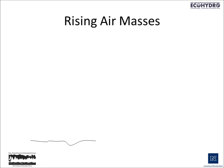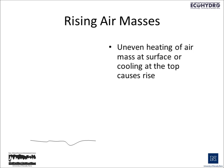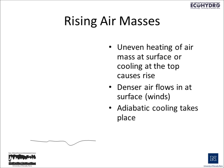How do air masses rise? In part, this can happen when we have uneven heating of air masses at the surface, or cooling at the top, that causes a rise. We can also have denser air flow in at the surface, forcing air upward and causing cooling as it ascends. This kind of cooling is called adiabatic cooling, and rapid upward rise of air masses is what is responsible for summer thunderstorms.